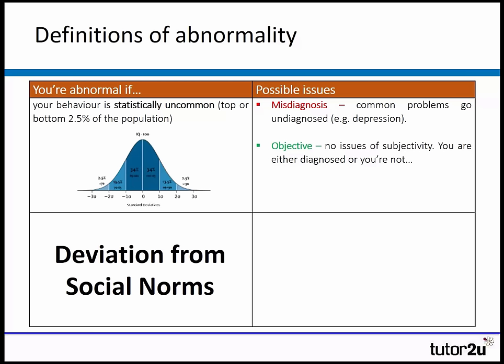There are some issues with this particular definition. The first one is misdiagnosis — common problems can quite often go undiagnosed. For example, depression is actually quite a common psychological disorder, certainly more than 2.5% of the population. Therefore, people with depression will be deemed as normal using this definition.